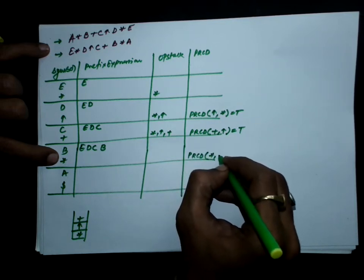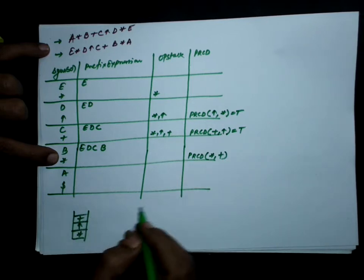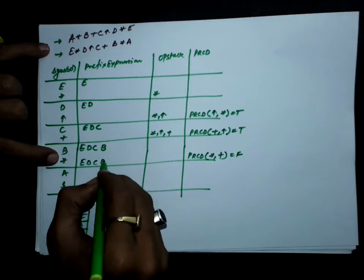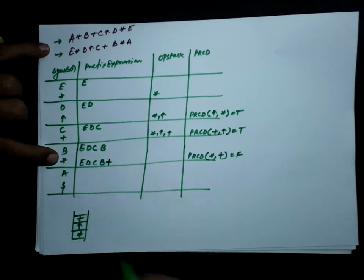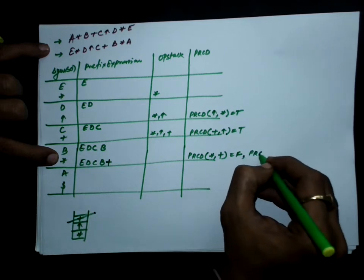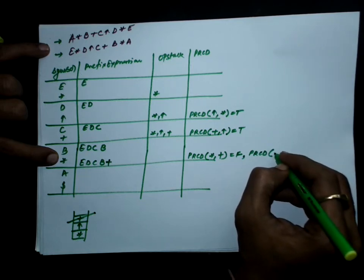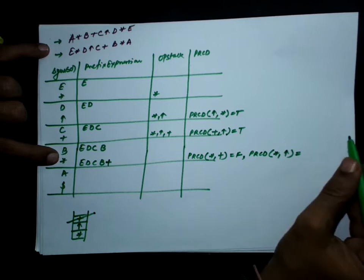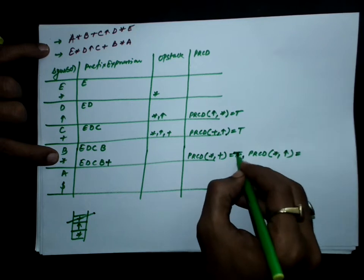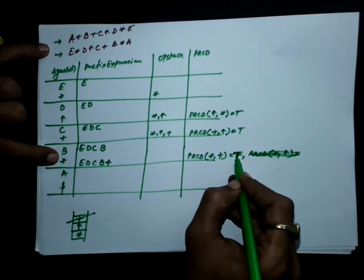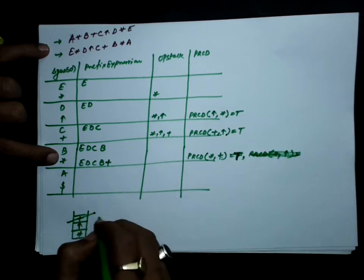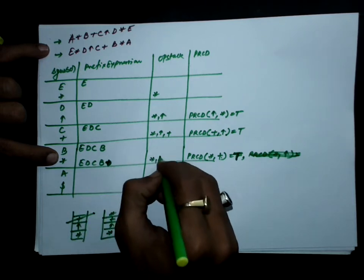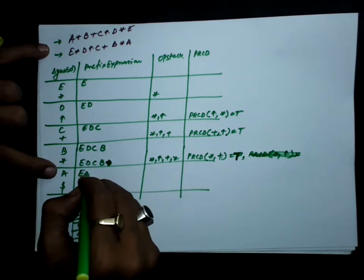Multiplication is an operator; check precedence for multiplication over stack top which is plus — this precedence is false. In case of false, we pop the stack and add the popped value (plus) to the prefix expression. We then check again: multiplication over stack top (exponent) — this condition is true. Since it is true, we push multiplication on the stack. The stack now has multiplication, exponent, and plus, with prefix so far being e, d, c, b, a.